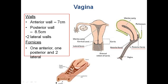The vagina is the lower part, a continuation of the cervix. When seen in sagittal section, it has an anterior wall measuring around 7 cm and a posterior wall of 8.5 cm, and two lateral walls. It has two folds called fornices, formed due to the invagination of the cervix. We have one anterior fornix, a posterior fornix behind it, and lateral fornices on either side.